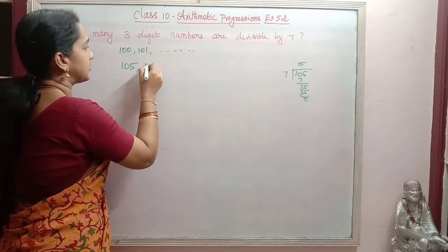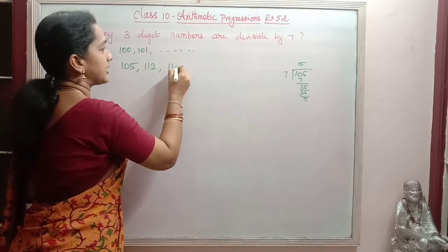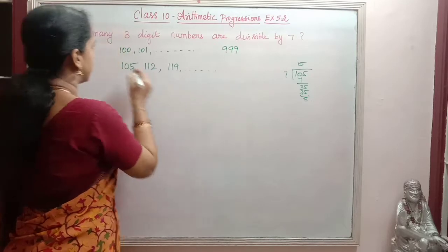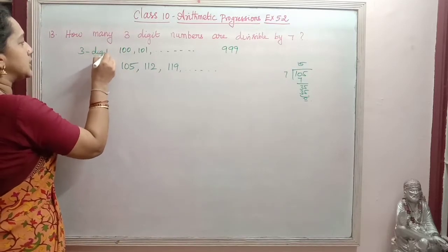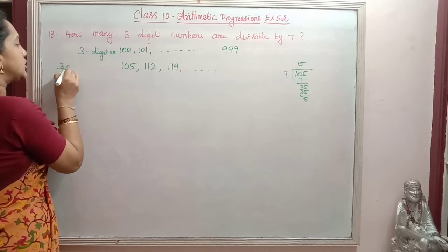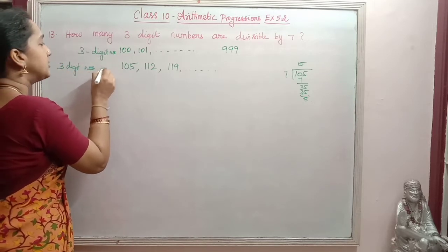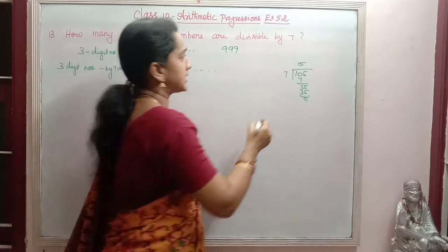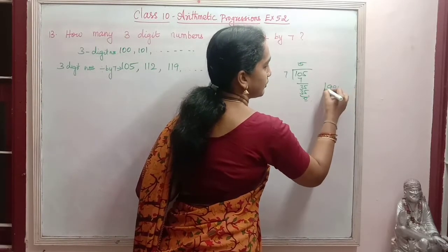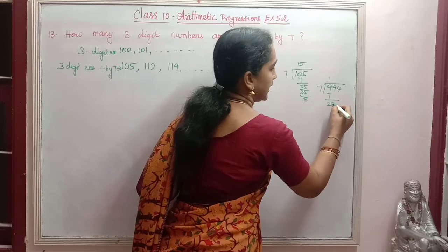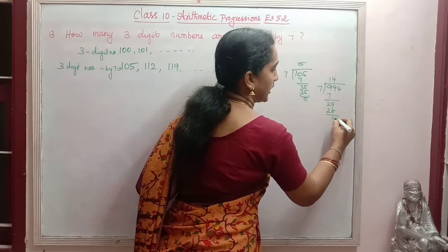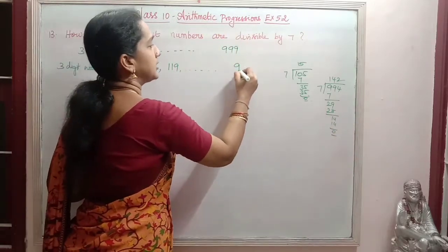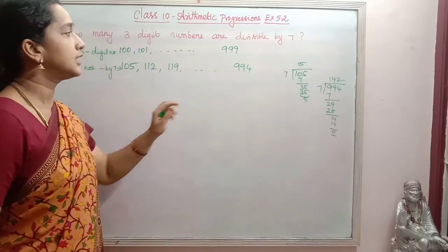If we add 7 to 105, we get 112. Then the next is 119, and so on. The last 3-digit number is 999. The last 3-digit number divisible by 7 is 994, since 7 × 142 = 994.